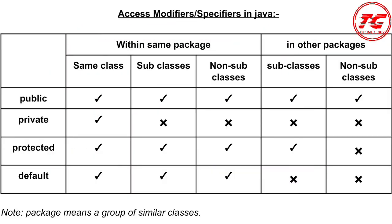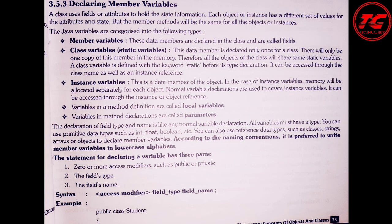Here is a chart showing the modifiers and their impact on visibility of data members. The chart has four modifiers with two columns: same package and other packages. Where there is a tick, that member is visible; where there is a cross, that member is not visible. You can use this table to understand the modifiers and their effect on visibility.